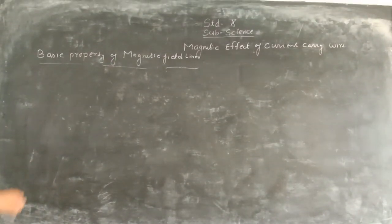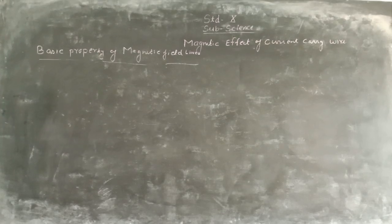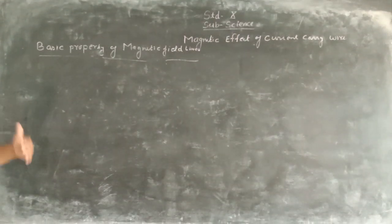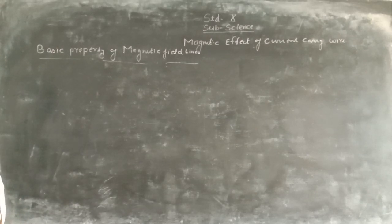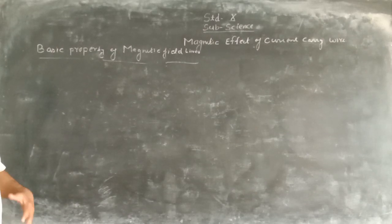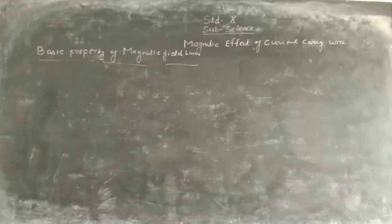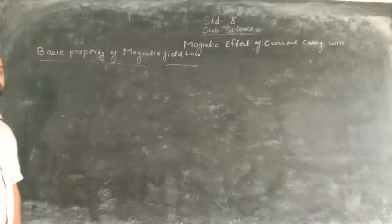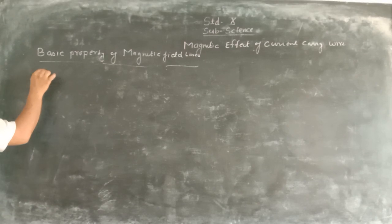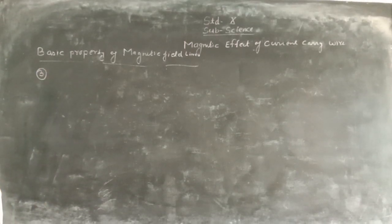The basic properties we covered in the previous lecture: magnetic field lines originate from the north pole and enter into the south pole. And magnetic field lines always form a closed loop. The third basic property we have to discuss here is that two magnetic field lines cannot intersect each other.